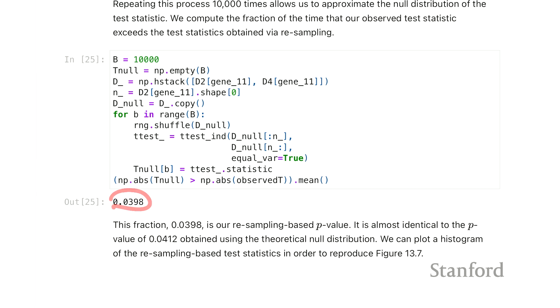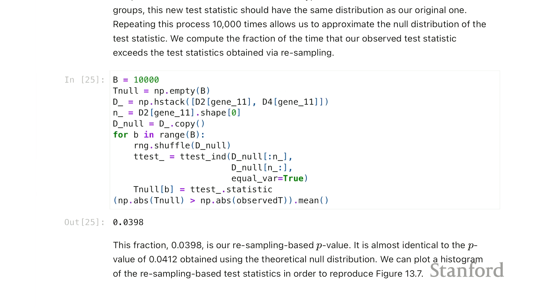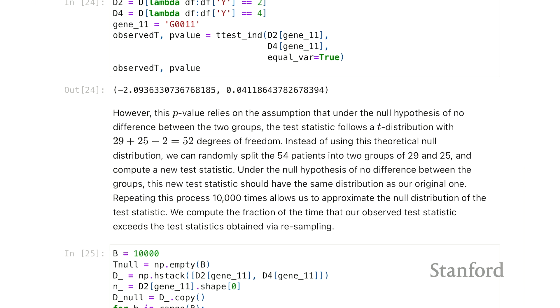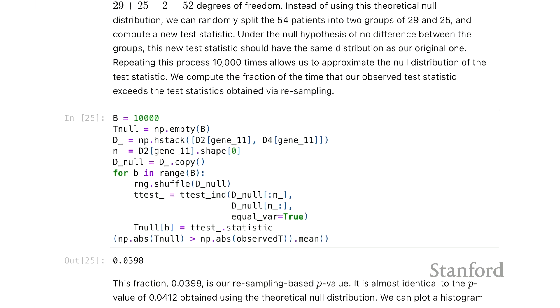The p-value here is about, again, about 0.04, and that's very close to what we saw before. Almost, if we were to round it to two decimal places, they would agree. Or, sorry, two significant digits, they would agree.